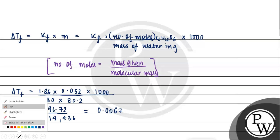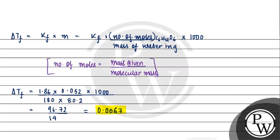So now our delta Tf value is 0.0067. I hope you understood the question well. Best of luck.